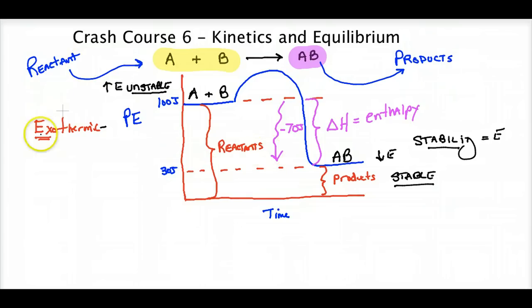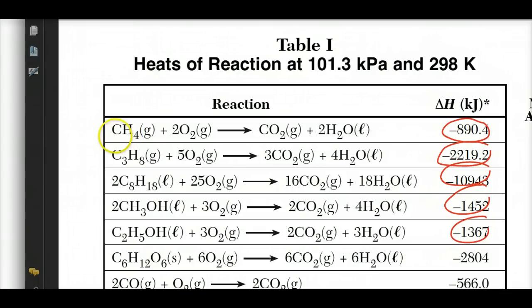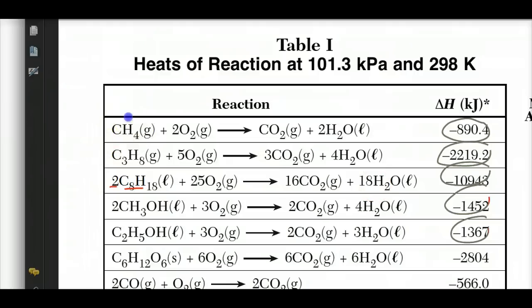These delta H values in Table I are based on the molar quantities in the equations. A minus sign indicates exothermic. Pay attention to the stoichiometric values — for octane there are two molecules, so if you want energy per one mole, divide by two. If they ask for 0.5 moles, divide by four. The delta H is per the quantities represented by the stoichiometric coefficients.